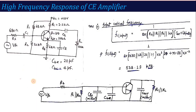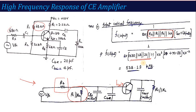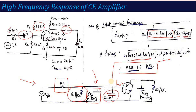In the equivalent circuit, the input side equivalent resistance is R_S || R1 || R2 || HIE. The total input capacitance is CBE in parallel with C_in(Miller), so C_equivalent = CBE + C_in(Miller). Using the formula f_c = 1 / (2π R C), substituting the input equivalent resistance and total input capacitance gives the input side critical frequency (cutoff frequency).